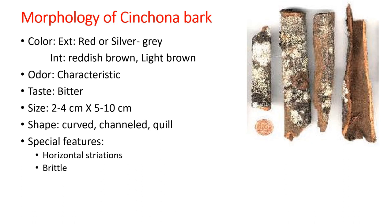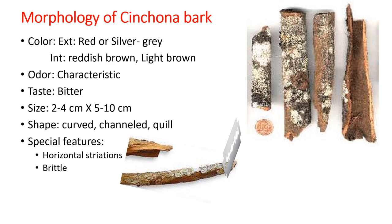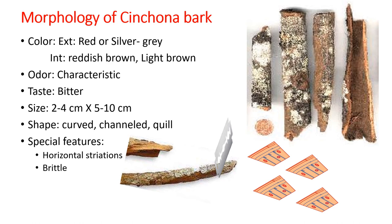For special features, this bark has horizontal striations which make it distinct from other barks. Furthermore, it is extremely brittle, so when taking a section, the bark must be properly submerged in water overnight. Even during sectioning, 1 or 2 drops of water should be continuously added to keep it hydrated. To take a section, hold the bark in a horizontal position and pass the blade perpendicularly to the length of the bark — this gives the transverse section, which comprises various layers.